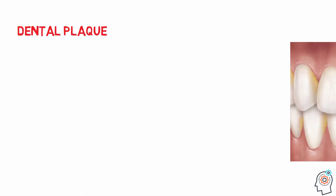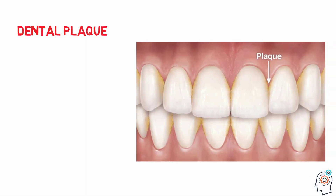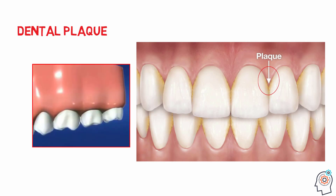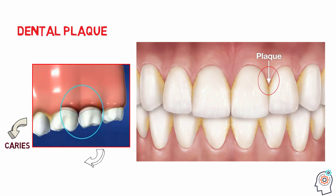Dental plaque is an almost invisible film of bacteria that accumulates on our teeth and gums, especially in the spaces between the teeth and along the gum line. If dental plaque is not removed regularly from the teeth, it can cause tooth decay and dental cavities or periodontal problems.